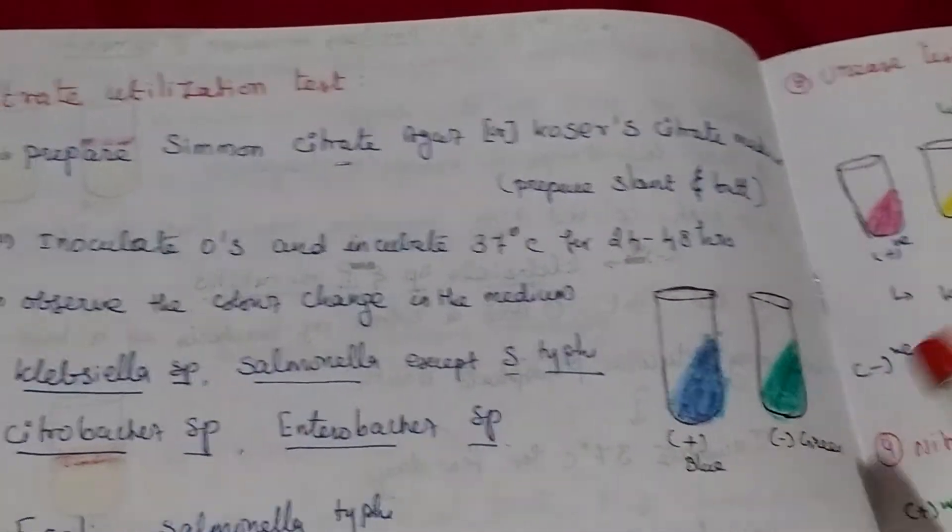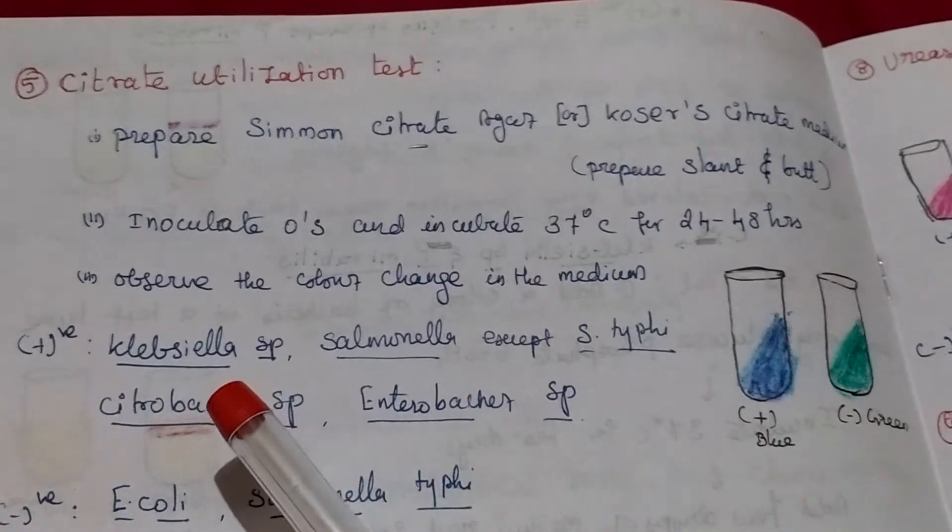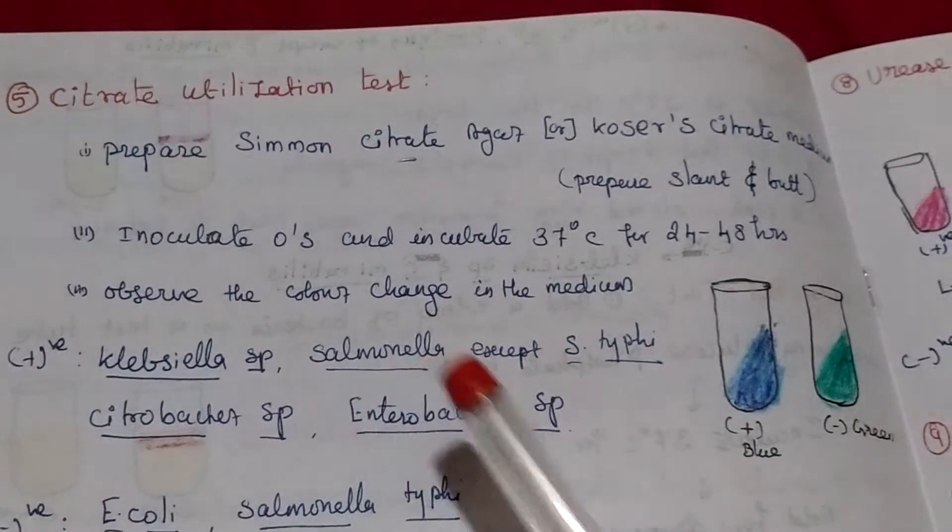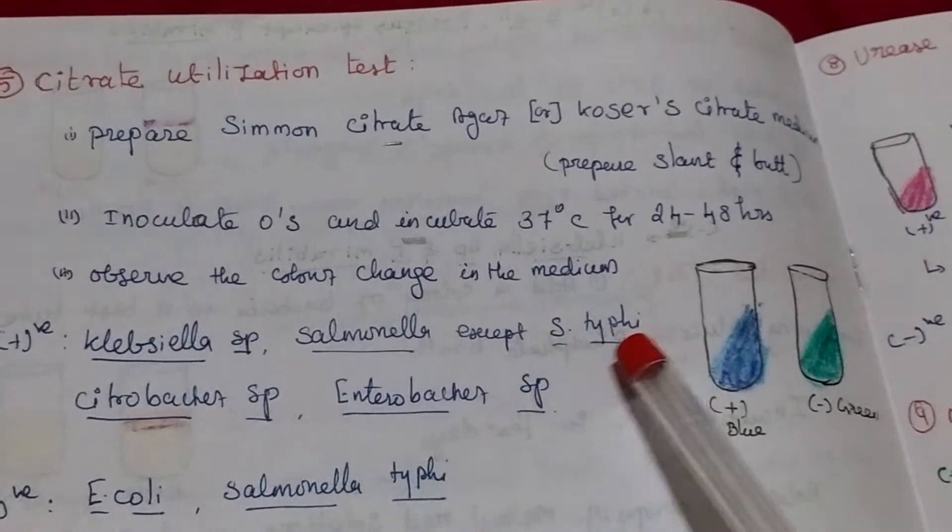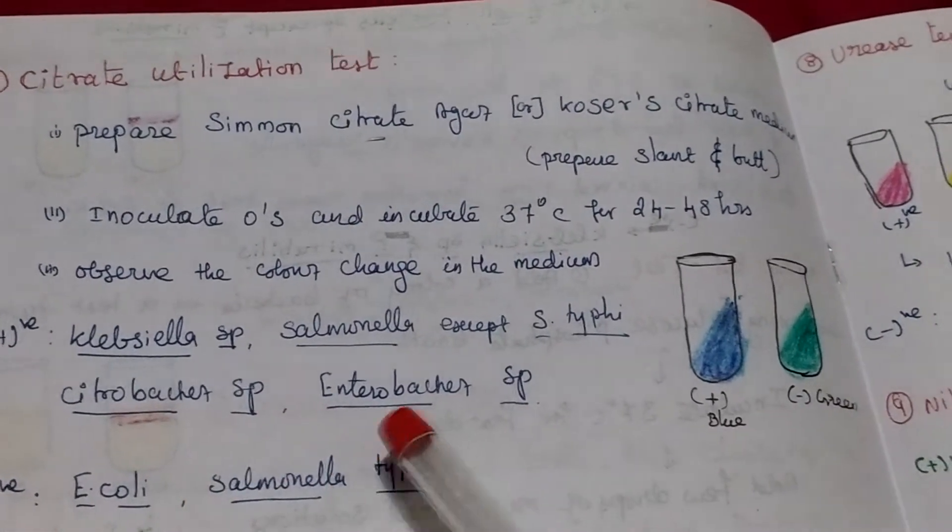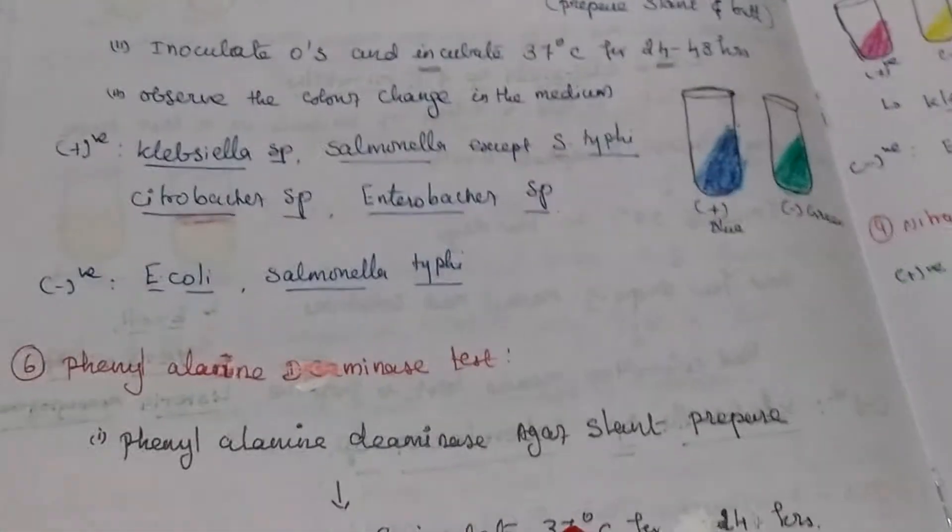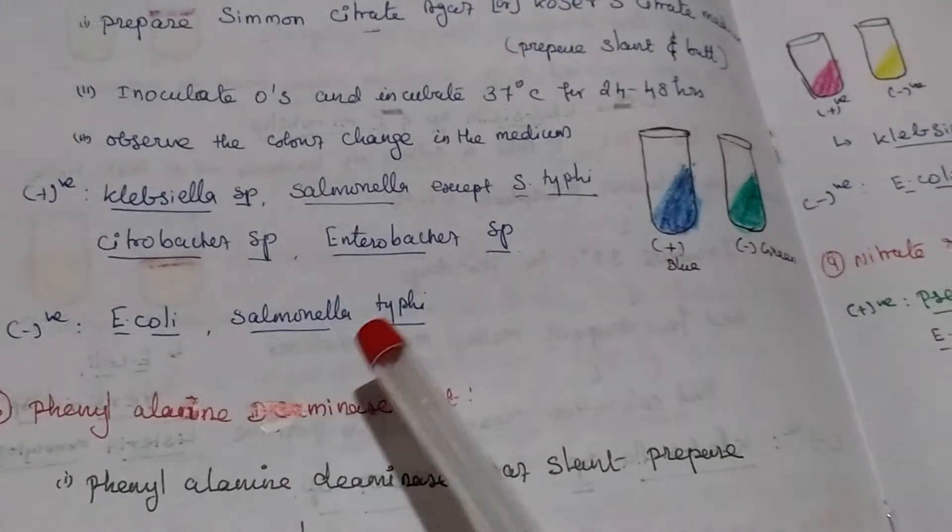Blue color positive, green color means negative. Positive organism Klebsiella and salmonella except salmonella typhi. Citrobacter species and enterobacter species also. Negative organism E. coli and salmonella typhi.